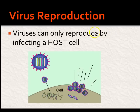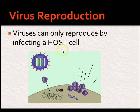Virus reproduction is different from our reproduction. It's not sexual reproduction, it's not asexual reproduction — it's kind of its own thing. They can't make more of themselves; they have to take over a cell and infect it. They can only reproduce by infecting a host cell. They're the parasite, and we are unfortunately the host if you're the one who's sick with the virus.